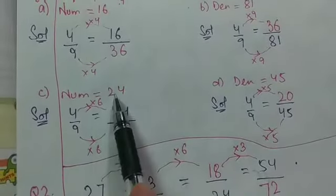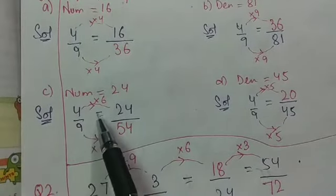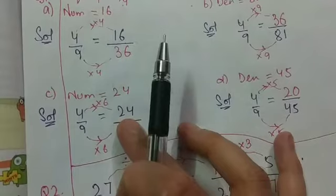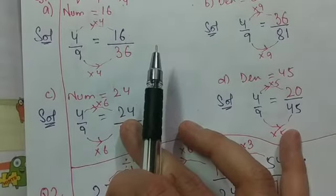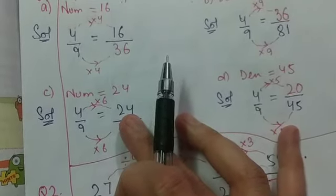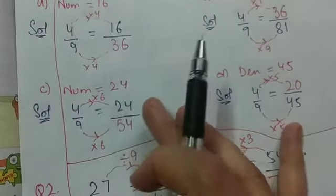Now the fourth part is 24. So 4 by 9 equals to 24 upon. So now I multiply by 4 by 9. So 9 multiplied by 6 is 54.